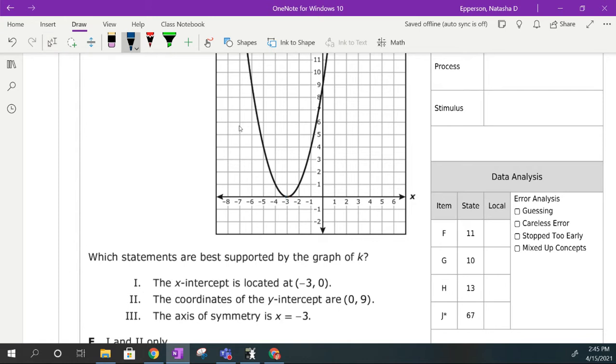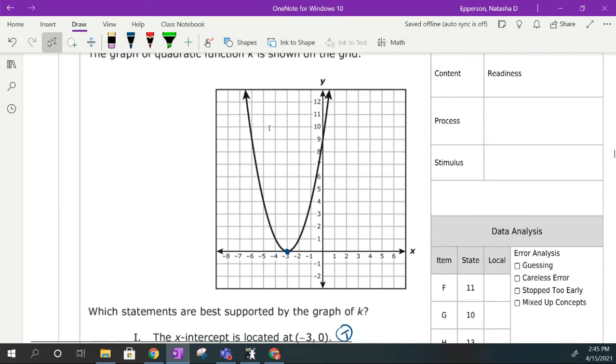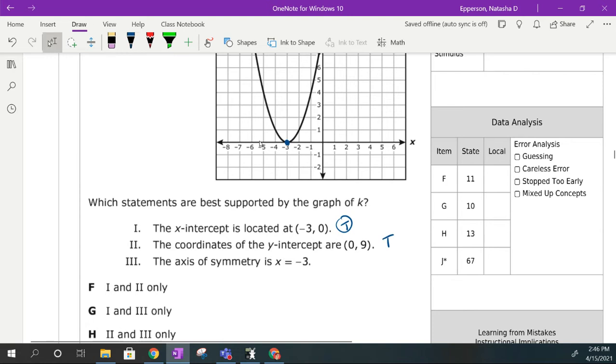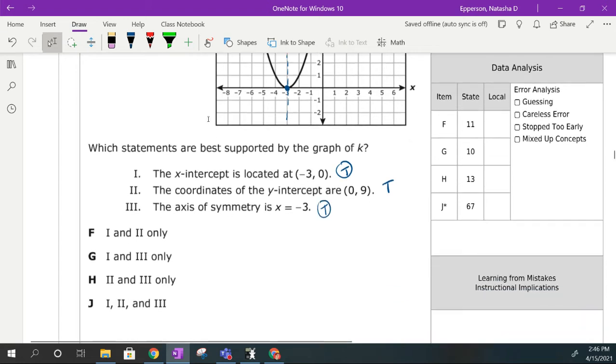X-intercept is located at negative 3, 0. This is true. The y-coordinate intercept is at 0, 9. That's right there. That is also true. Axis of symmetry is in our vertex of negative 3. This is also true. So our answer is going to be J, because it says 1, 2, and 3 are true.